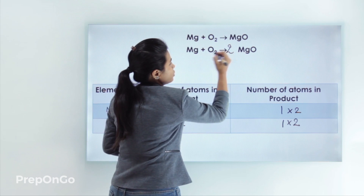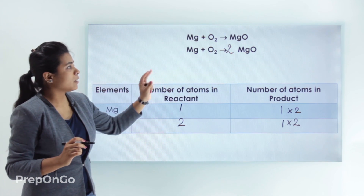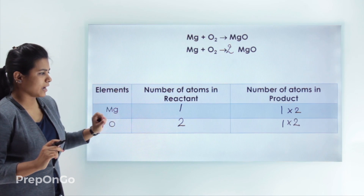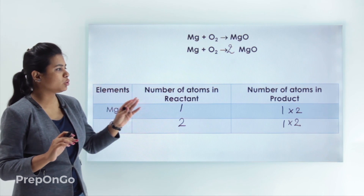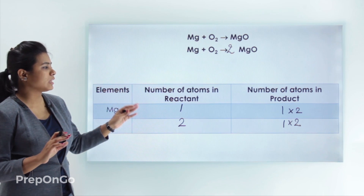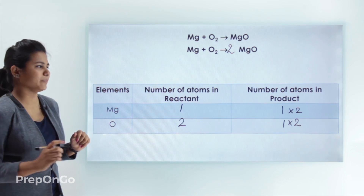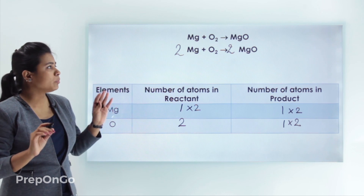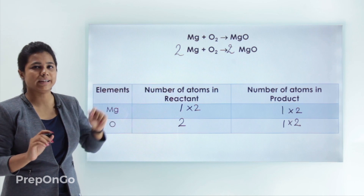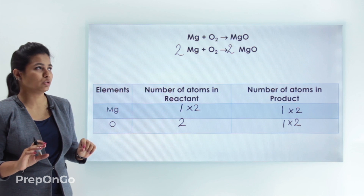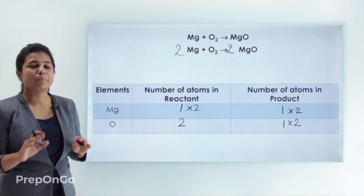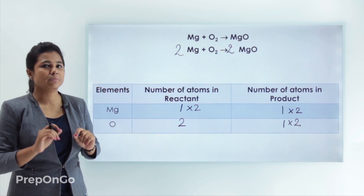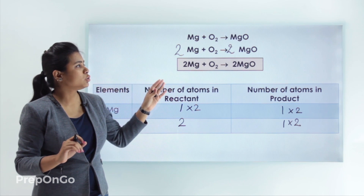We put a coefficient of 2 in front of MgO. Now the right hand side has two magnesium atoms and two oxygen atoms. Oxygen is now balanced with two atoms on both sides. However, magnesium now has two atoms on the right but only one on the left, so we put a coefficient of 2 in front of Mg on the left hand side. Now there are two magnesium atoms and two oxygen atoms on both sides — the equation is balanced. The final balanced equation is: 2Mg + O2 → 2MgO.